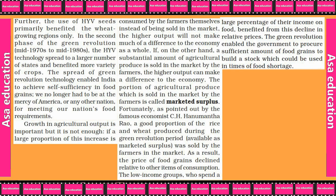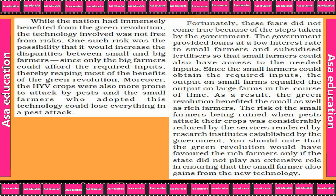While the nation had immensely benefited from the Green Revolution, the technology involved was not free from risk. One such risk was the possibility that it would increase disparities between small and big farmers, since only big farmers could afford the required inputs such as pesticides, fertilizers, and irrigation facilities, allowing them to reap most of the benefits of the Green Revolution.